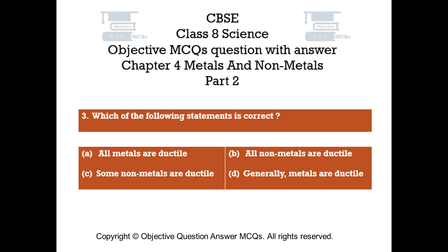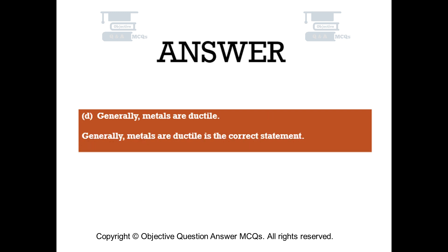Question number 3: Which of the following statements is correct? Option A: All metals are ductile. Option B: All non-metals are ductile. Option C: Some non-metals are ductile. Option D: Generally, metals are ductile. The right answer is Option D — Generally, metals are ductile is the correct statement.